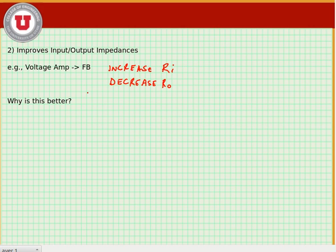And why is this better? Well, remember, if we look at our input circuit, we might have a signal source, VS, that has some resistance associated with it, RS. And if we want to minimize the voltage drop across the input of our amplifier, if the input resistance Ri tends towards infinity, then we don't get any voltage division for this circuit.